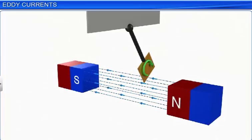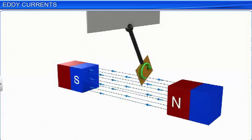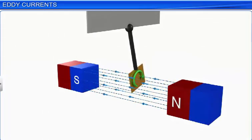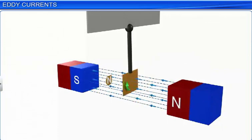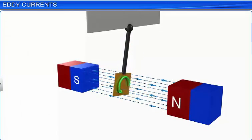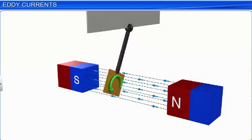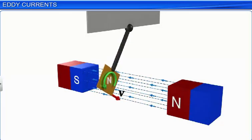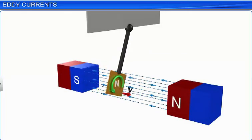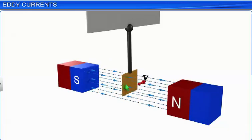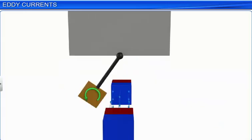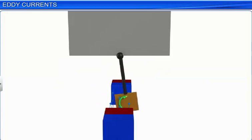As the plate enters the magnetic field, the external magnetic flux through the plate increases. Hence, by Lenz's law, the induced current must provide effective magnetic poles on the plate that are repelled by the poles of the magnet. Thus, here, a north pole is induced over the surface of the plate, facing the north pole of the magnet.